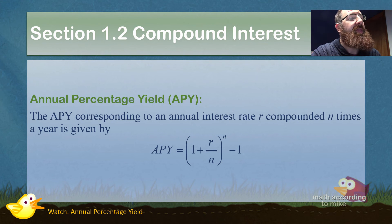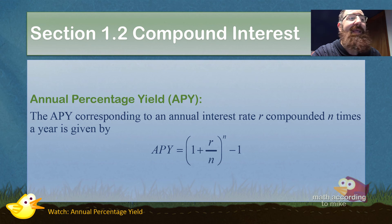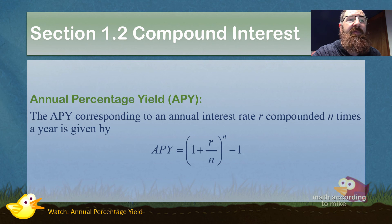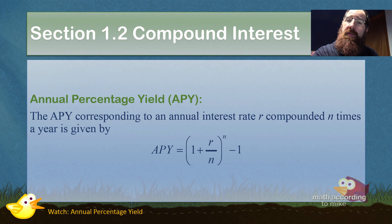The APY corresponding to an annual percentage rate R — that's the APR — compounded N times per year is given by this formula: APY equals 1 plus R over N, raised to the N, minus 1. There's also a video that shows you how to use it. Enjoy.